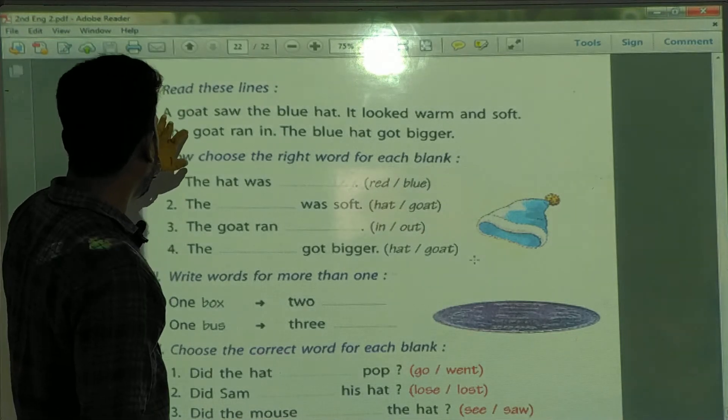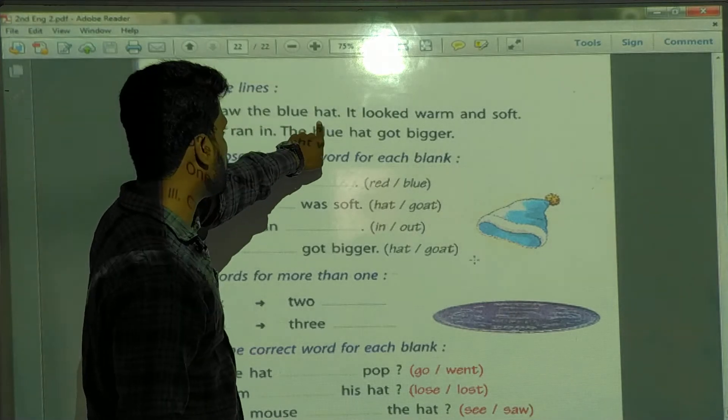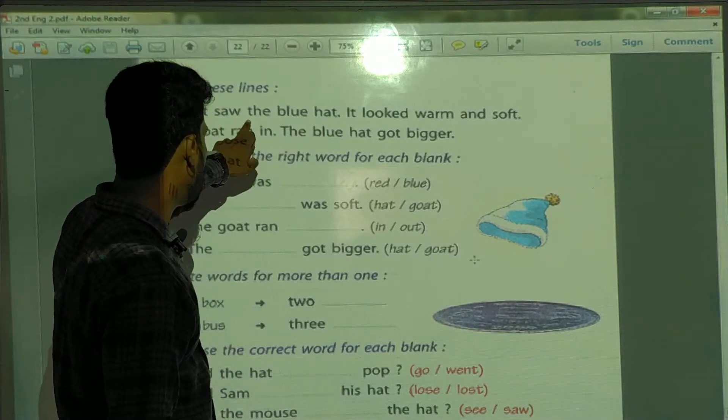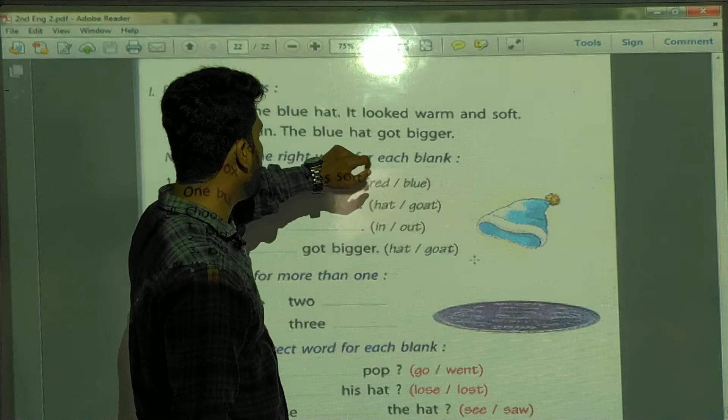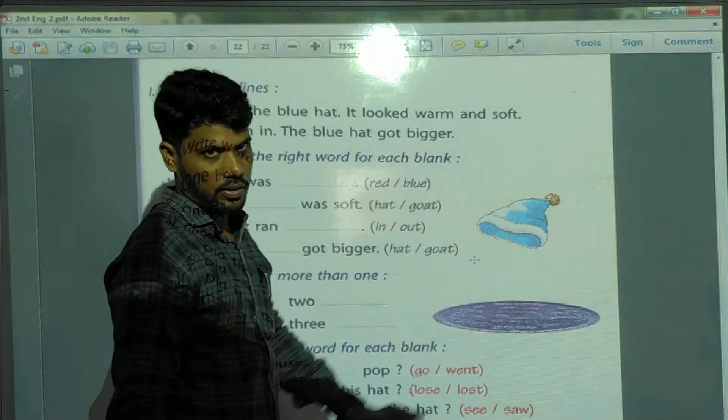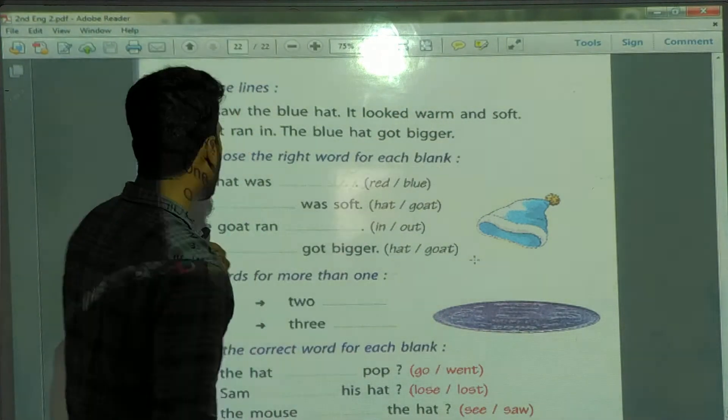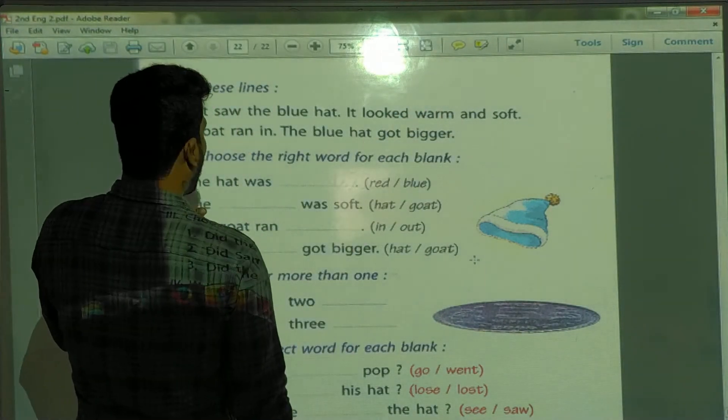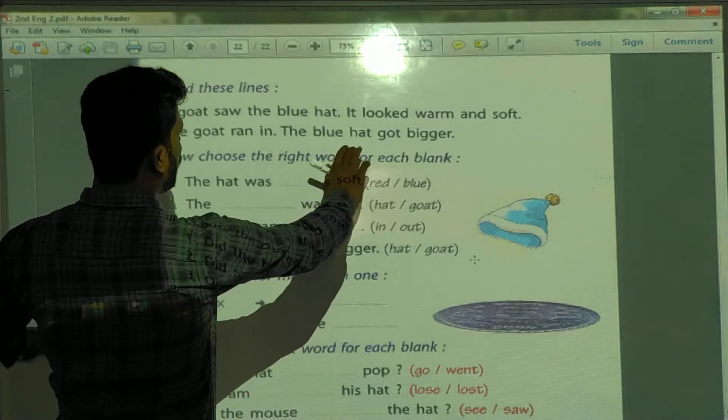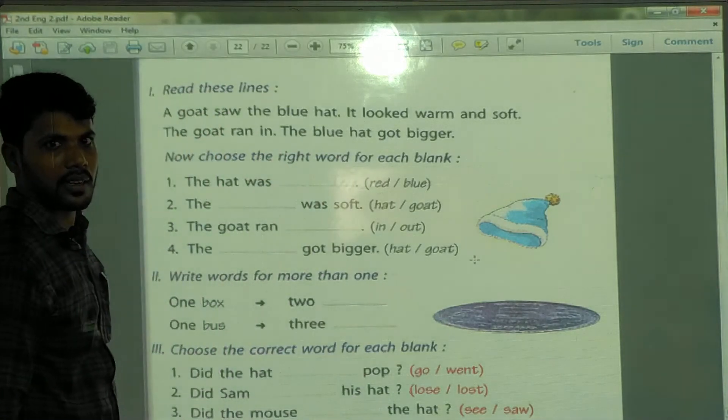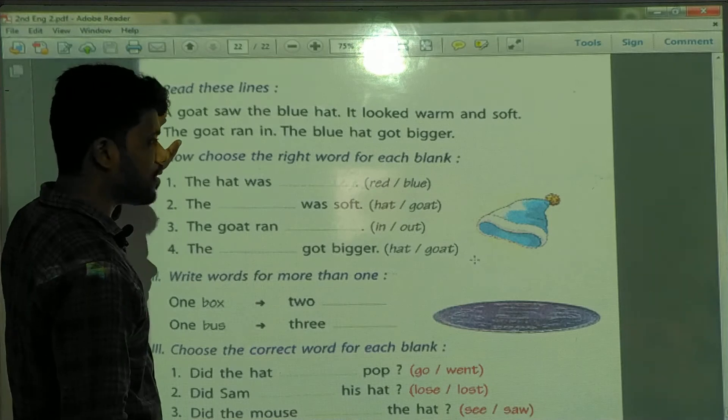See, read after me. A goat saw the blue hat. A goat saw the blue hat. It looked warm and soft. It looked warm and soft. The goat ran in. The blue hat got bigger. Okay, so these are the lines.